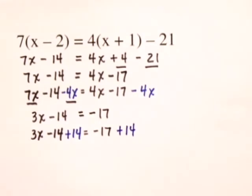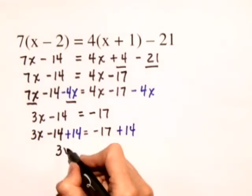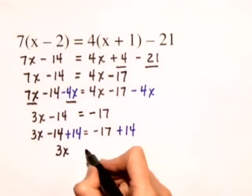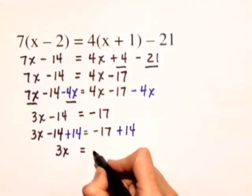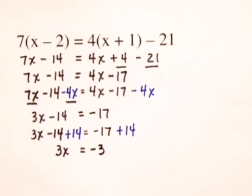On the left hand side we'll just have 3x. The minus 14 plus 14 adds to 0 equals, on the right hand side negative 17 plus 14 is negative 3.